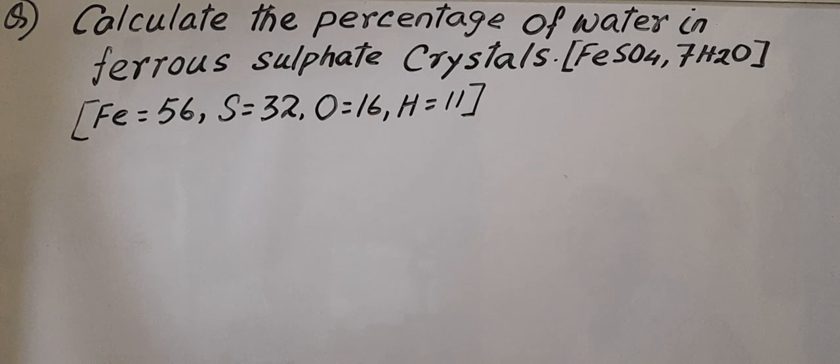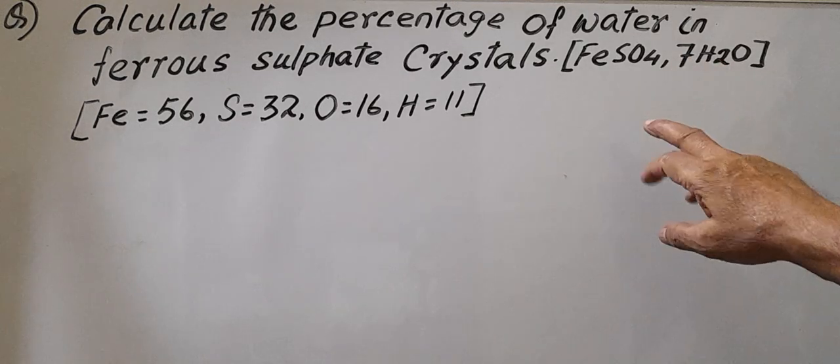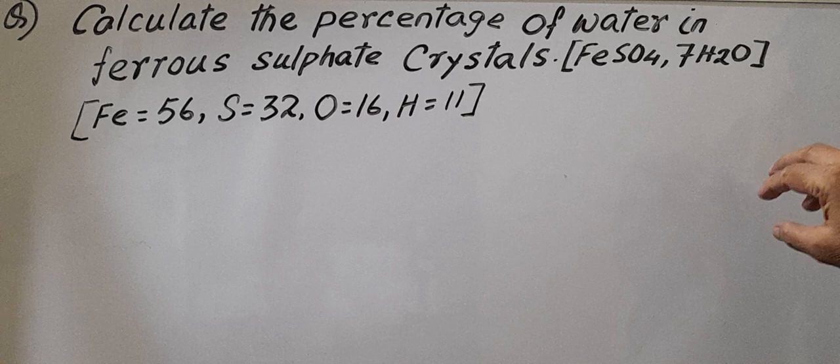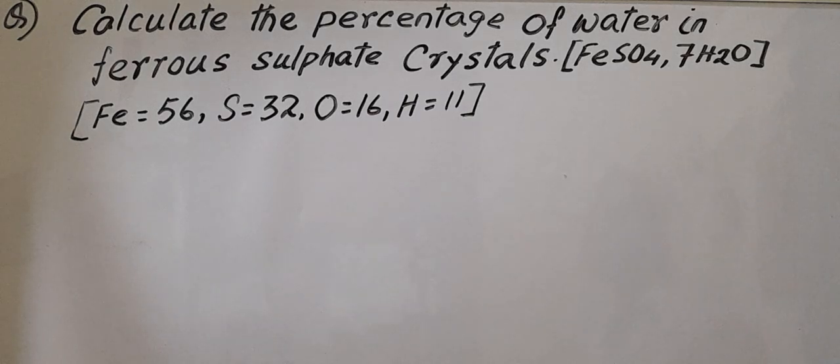Question is here, listen please. Calculate the percentage of water in ferrous sulfate crystals. Ferrous sulfate - the formula of ferrous sulfate crystal is FeSO4·7H2O. What means ferrous sulfate contains seven molecules of water.